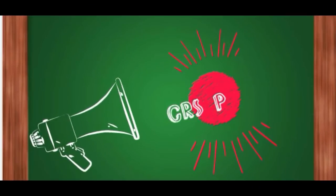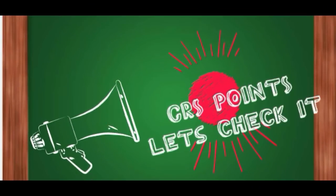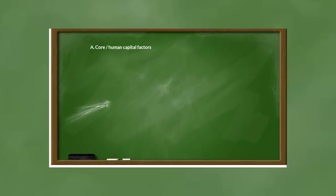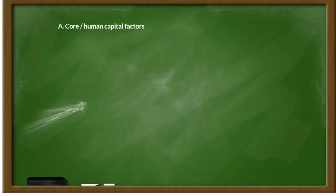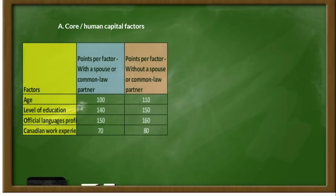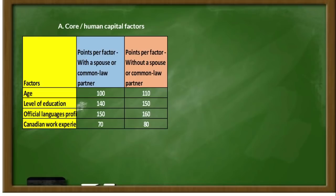Let's check the CRS points. The first factor is the core human capital factor, which is divided into 4 sub-factors: age, level of education, language proficiency, and Canadian work experience. In this case, you can get different points depending on whether you are with a spouse or without a spouse.